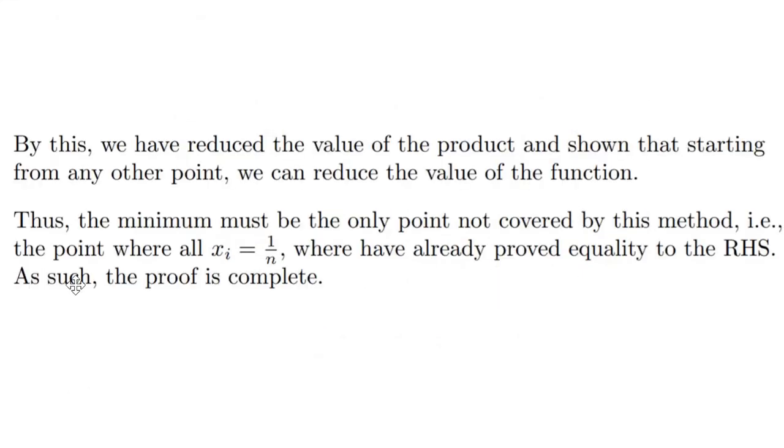What we have proved is that by selecting such a p and taking up the new values, we have reduced the value of the function, and as such the original point that we started with was not a minima. Thus the minimum must be the only point that is not covered by this method—that is the point where all the x's are equal to 1/n, where we have already proved equality to the RHS. And as such the proof is complete.